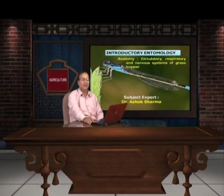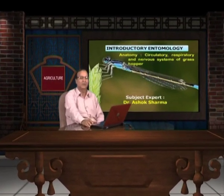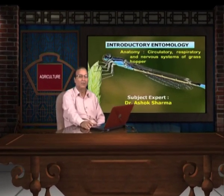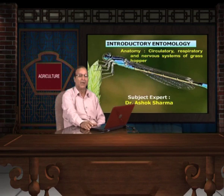Hello viewers, today we shall discuss about the rest of the anatomical portions which we have left, and this portion includes the circulatory system, respiratory system and nervous system of grasshopper.